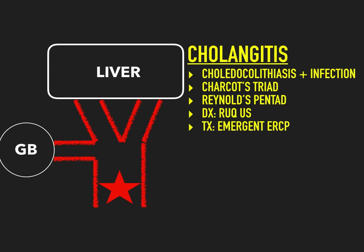This can progress to Reynolds pentad, where you add hypotension and altered mental status to Charcot's triad. At that point, the patient may be going into shock. This is often misdiagnosed because someone comes in with right upper quadrant pain and doesn't know what to look for, but the patient is quickly progressing into shock, so it must be treated emergently. Diagnose with a right upper quadrant ultrasound, then treat with an emergent ERCP to remove the stone. The patient could go into shock and die if it's not removed — that's why cholangitis is the most severe of these four.